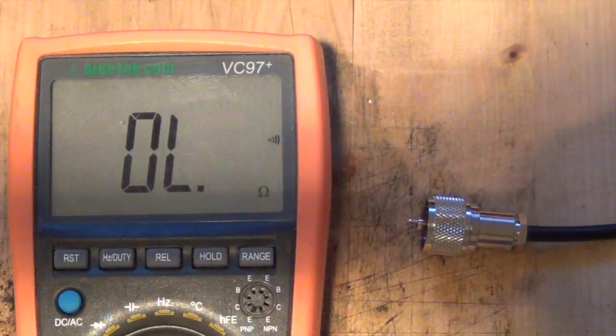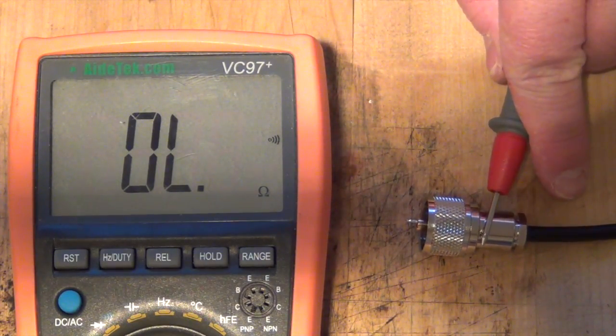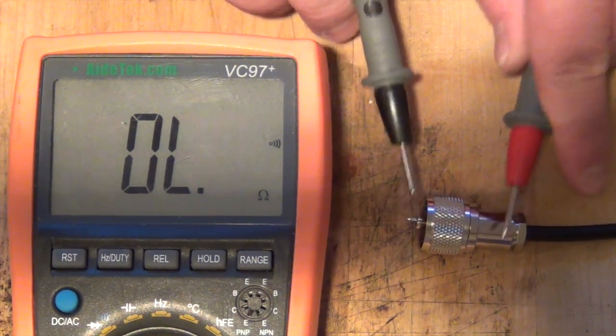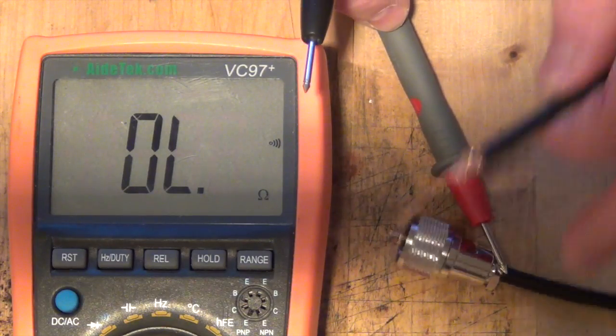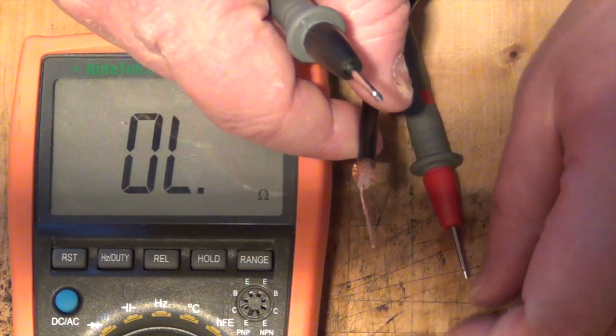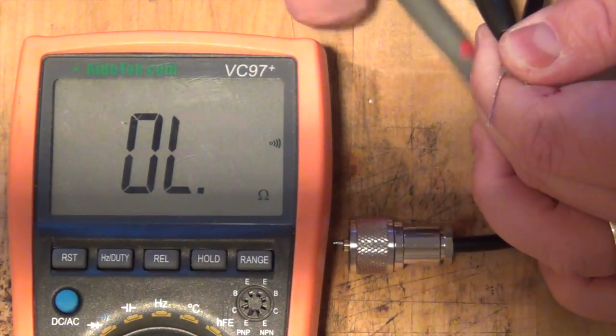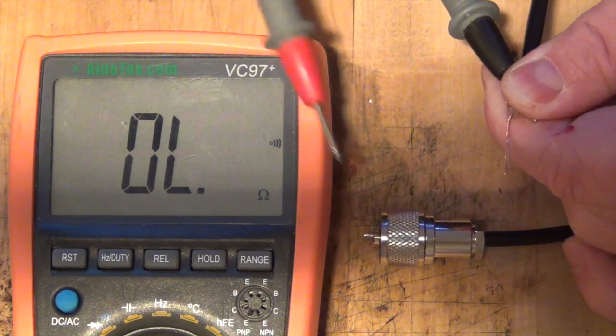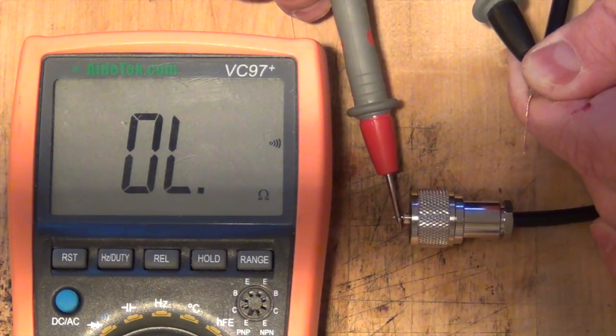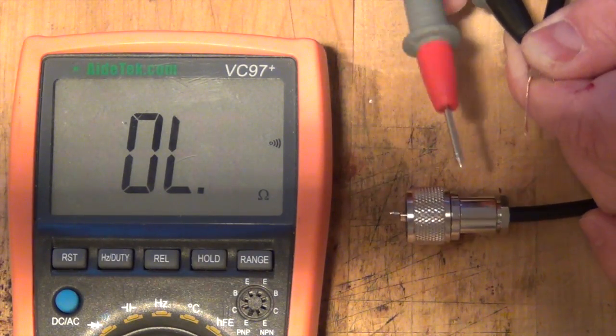Now testing. Before we actually solder the end of the connection, I just want to do some very simple continuity tests, making sure I don't have a short across the inner and the outer braid of the coax. I'm going to connect one probe to the outer and across the body there. And indeed I've got the connection, and I don't have a connection across the middle pin. That proves for sure that we don't have a short.